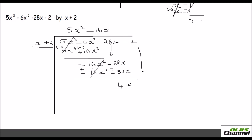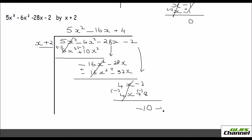Now bring down the last term which is minus 2. What should you multiply x by to get 4x? You need to multiply by 4. So that's a plus 4 here. When you multiply it becomes 4x plus 8. Now again you need to subtract — change the sign. So 4x is cancelled and you are left with minus 2 minus 8, giving minus 10. So this would be your remainder. Your answer is 5x squared minus 16x plus 4 with a remainder of minus 10.